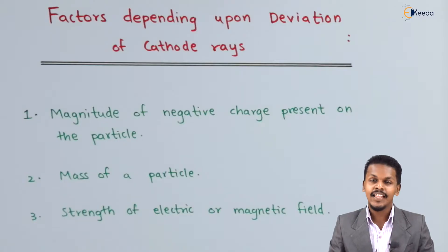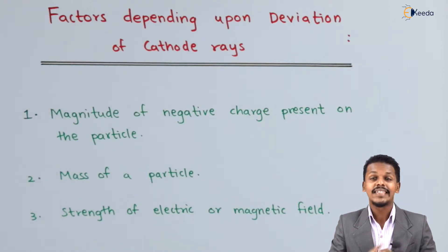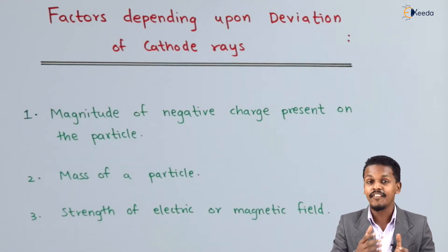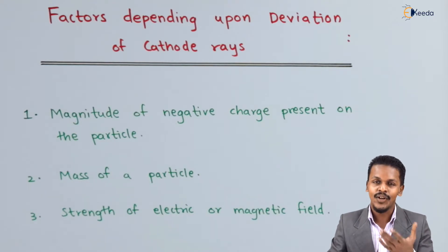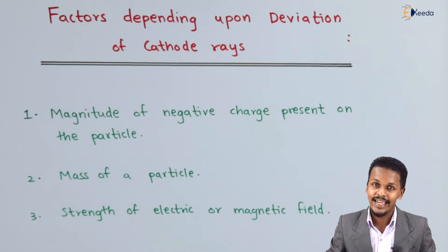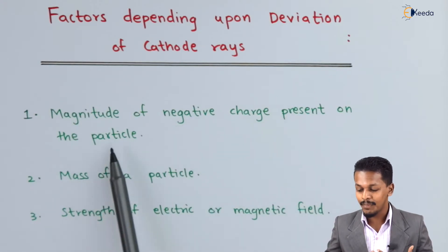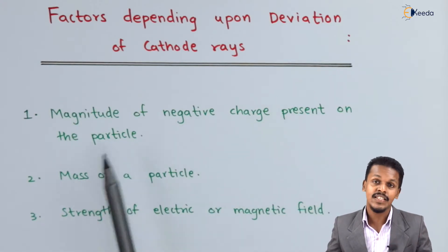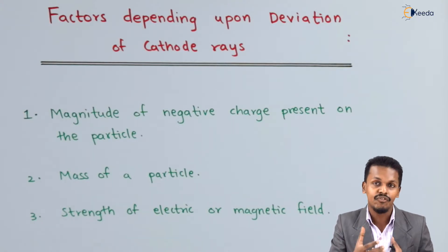In this topic let me discuss about the factors that depend upon the deviation of the cathode rays. We understand that cathode rays are nothing but negatively charged particles, and that's the reason the electric field and the magnetic field have an influence on these particles. The first factor is the magnitude of the negative charge present on the particle.